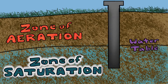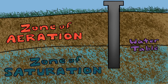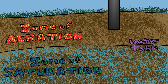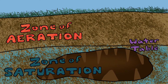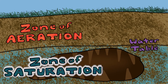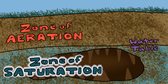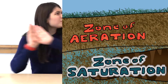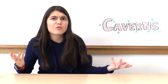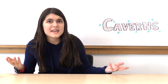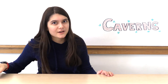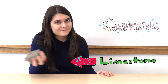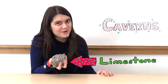This is where wells pump from. But why is this important to caves? Well, caves form at or below the water table in the Zone of Saturation. But wait — you need more than just some groundwater to form a cave. You also need a rock that's easy to chemically weather, namely limestone.